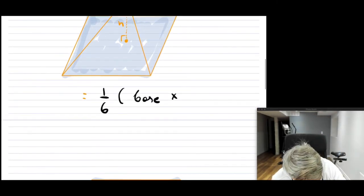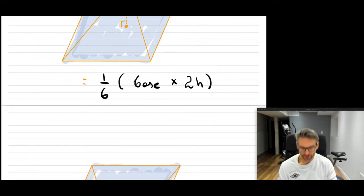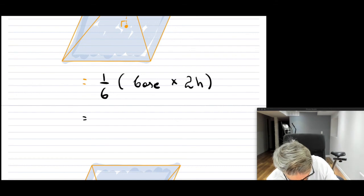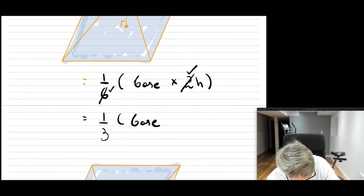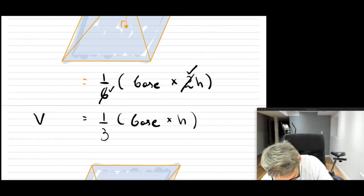And notice now, so what happens, because we have this two and then the six. So the two goes into the six, and this is one-third base times height, which is indeed the volume of the pyramid.